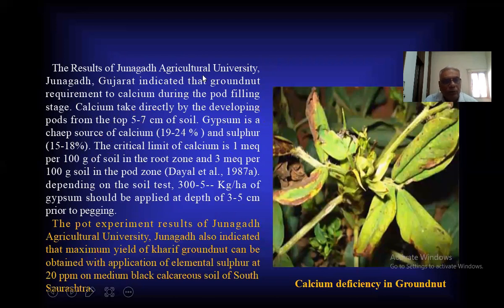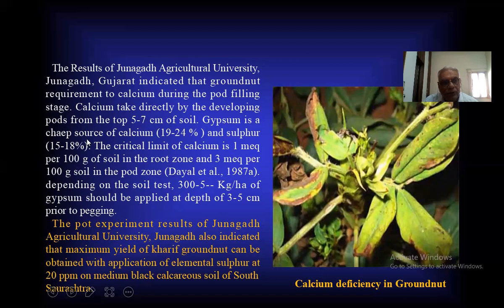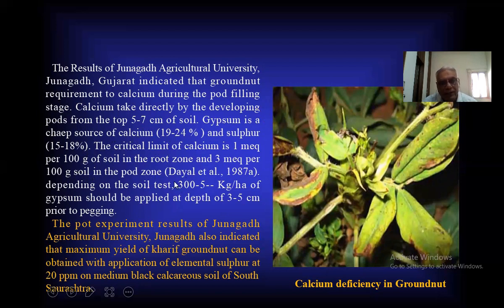The results of Junagadh Agricultural University, Junagadh, Gujarat indicate that groundnut requires calcium during the pod-filling stage. Calcium is taken up directly by the developing pod from the 5 to 7 cm of soil. Gypsum is a cheap source of calcium (20–24%) and sulfur (15–18%). The critical limit of calcium is 1 mEq per 100 g of soil in the root zone and 3 mEq per 100 g of soil in the pod zone, depending on soil type.